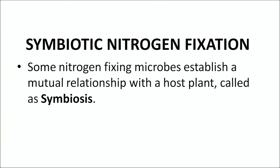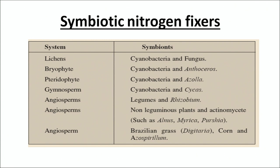Talking about symbiotic nitrogen fixation, certain nitrogen-fixing microbes establish a mutual relationship with a host plant called symbiosis, where both partners of the association benefit from each other. Examples include: Lichens — an association of cyanobacteria and fungi; Bryophytes involving cyanobacteria and Anthoceros; Pteridophytes involving cyanobacteria and Azolla; Gymnosperms involving cyanobacteria with Cycas; and Angiosperms showing an association between legumes and Rhizobium, as well as non-leguminous plants like Alnus, Myrica, and Partia with actinomycetes.